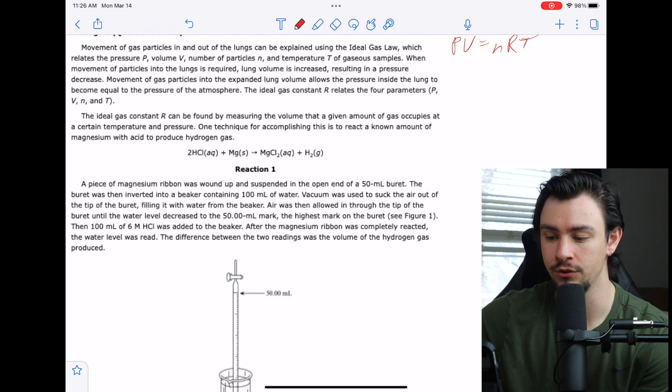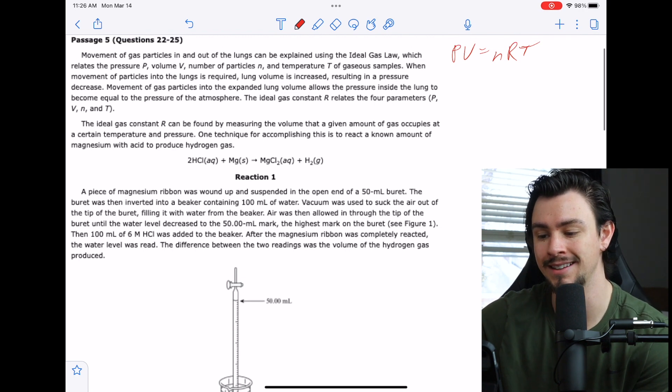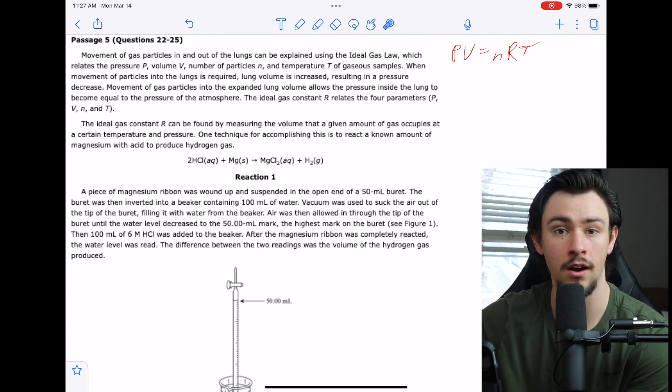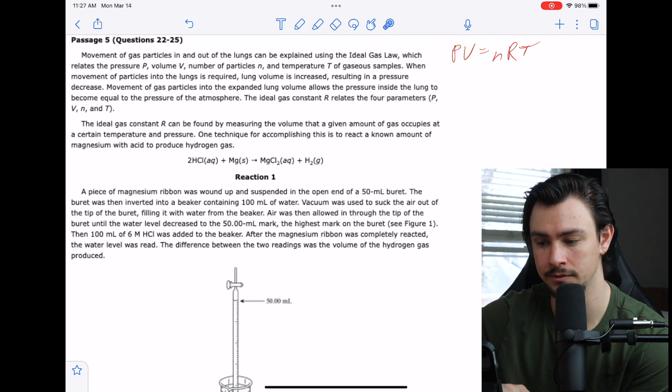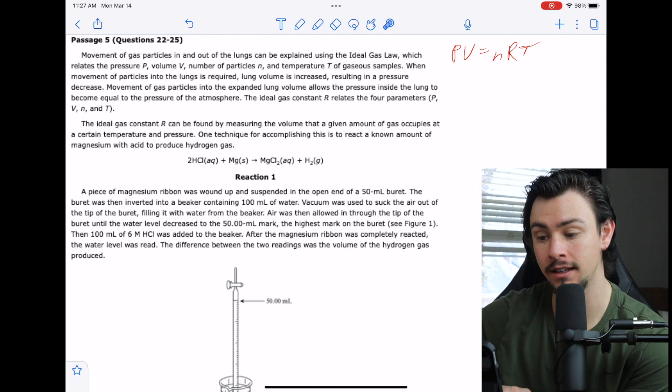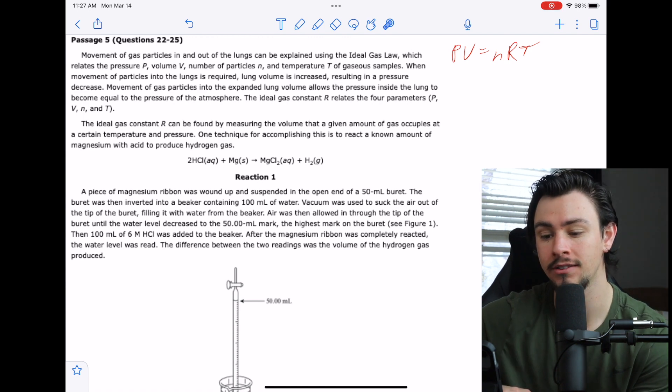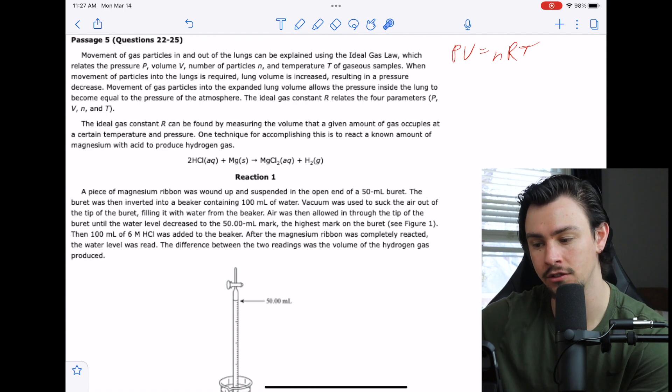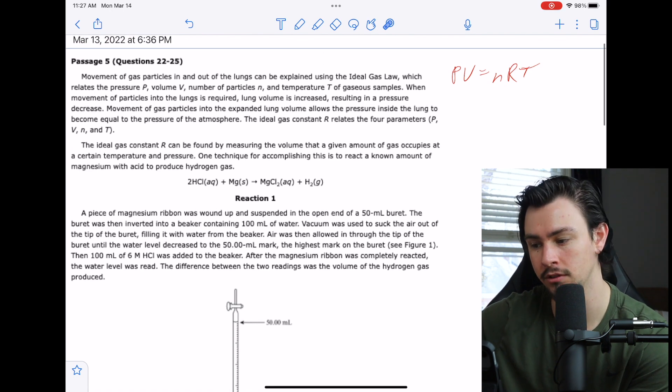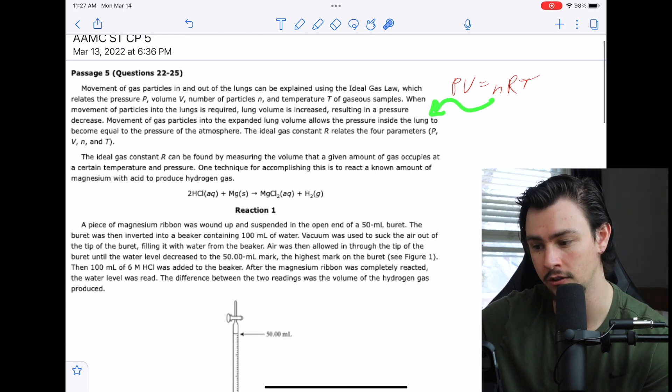When movement of particles into the lungs is required, lung volume is increased, resulting in a pressure decrease. That's pretty obvious. That's just applications of this formula. If all this is going to stay the same and volume goes up, pressure has to go down and vice versa. Movement of gas particles into the expanded lung volume allows the pressure inside the lung to become equal to the pressure of the atmosphere. The ideal gas constant R relates to four parameters. So they're just using the ideal gas constant and talking about how it's related to respiratory physiology.